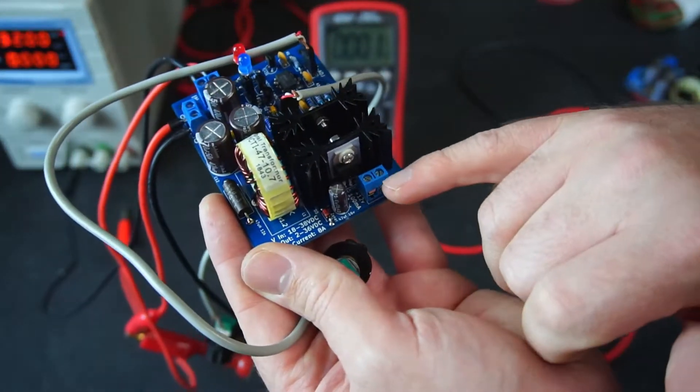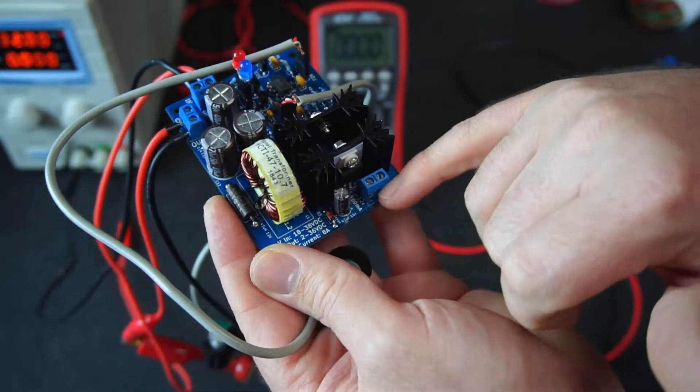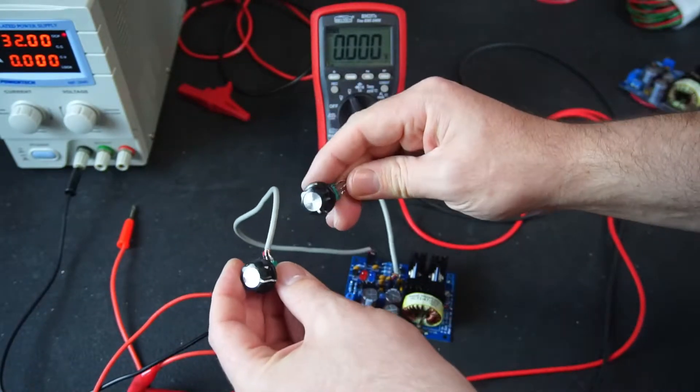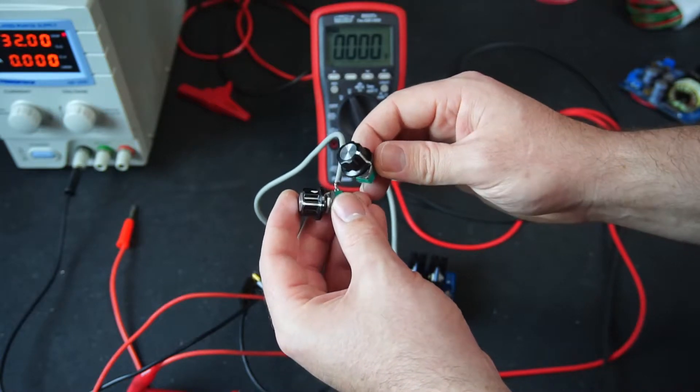I'll point out down here we've got a fixed 12 volt output for a volt meter so you can add a display really easily and then you just mount your current and voltage potentiometers on the case of your enclosure and away you go.